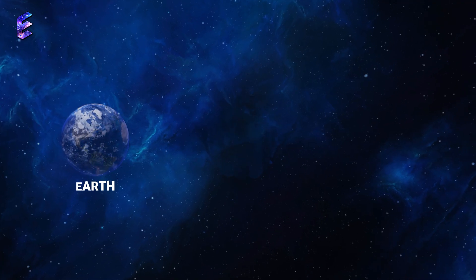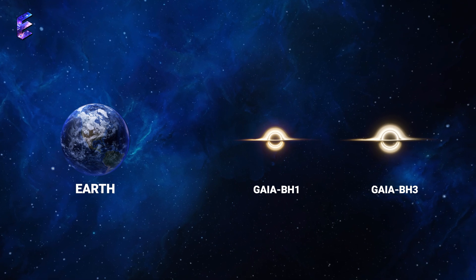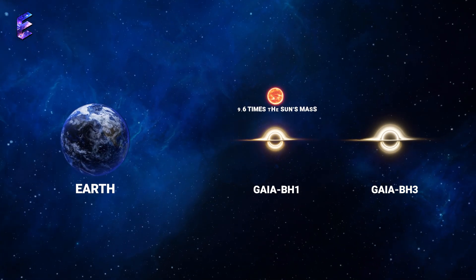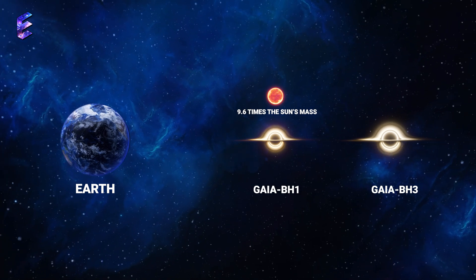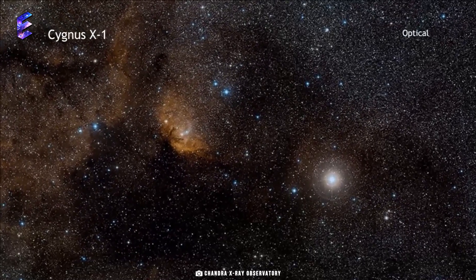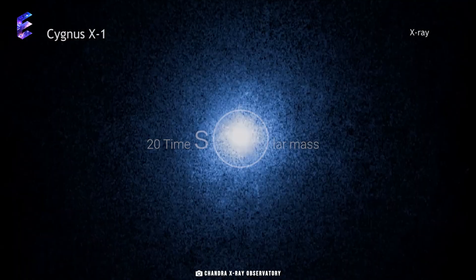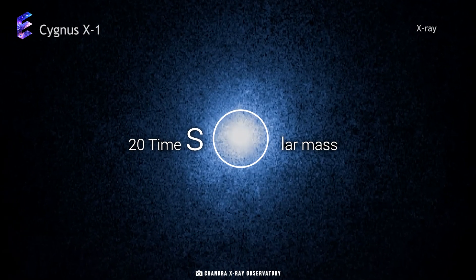Gaia BH3 is the second closest black hole to Earth. The closest black hole is Gaia BH1, which is a close 1560 light-years away, but that one is just 9.6 times the Sun's mass. The last record holder for the most massive black hole near Earth was Sig X-1, which was 20 times solar mass.